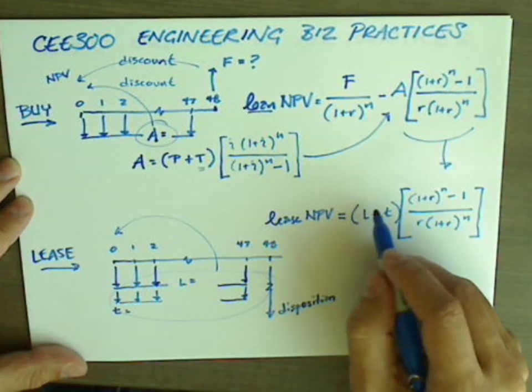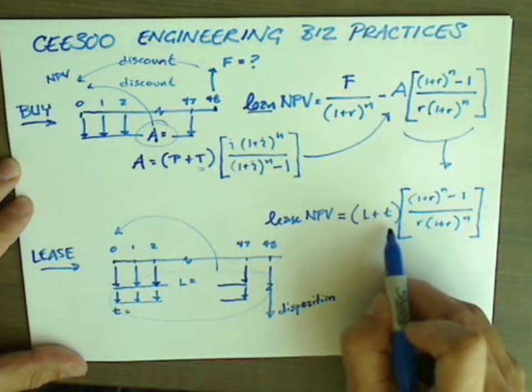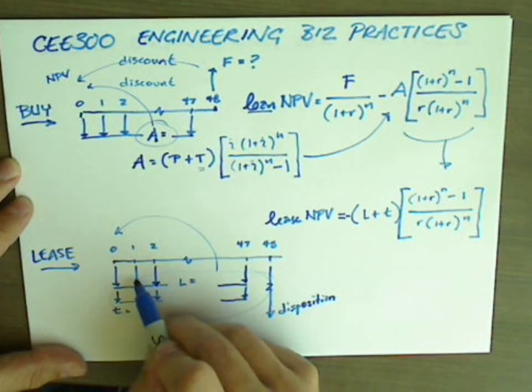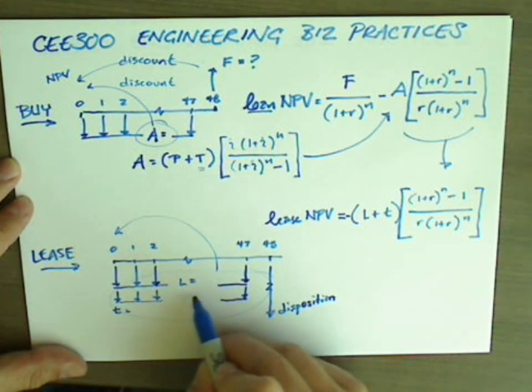You know that L and T, now keep in mind that I put this as value, but of course these should be negative values because you pay these. This is why I drew the arrows going down because these are amounts that you have to pay.